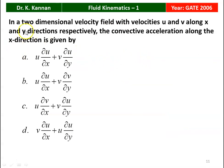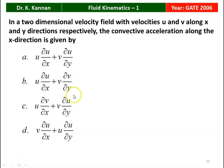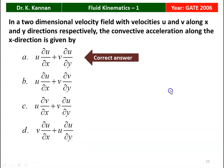Next question from the 2006 question paper. In a two-dimensional velocity field, the velocities are u and v along the x and y directions respectively. The convective acceleration along the x direction is given by: u·(dou u/dou x) + v·(dou u/dou y). The correct answer is option A: u·(dou u/dou x) + v·(dou u/dou y).